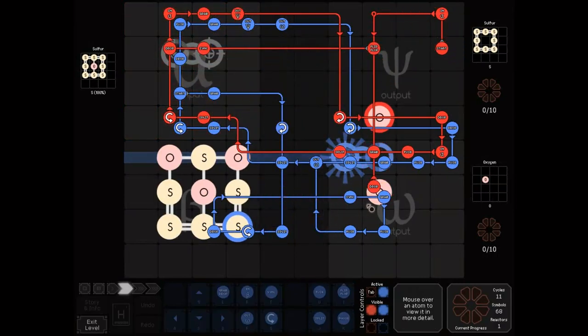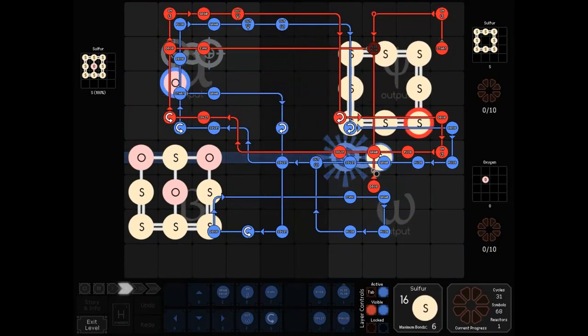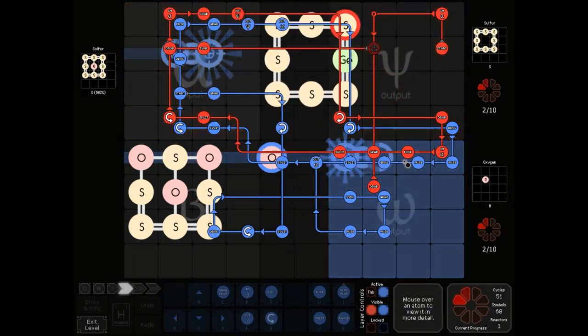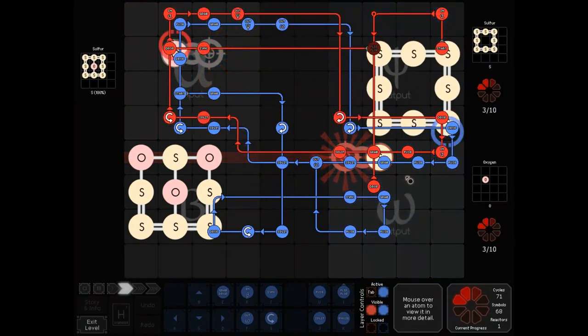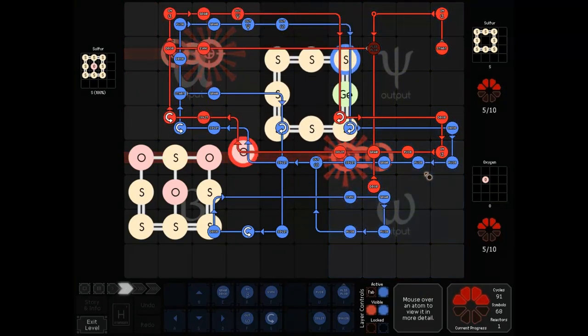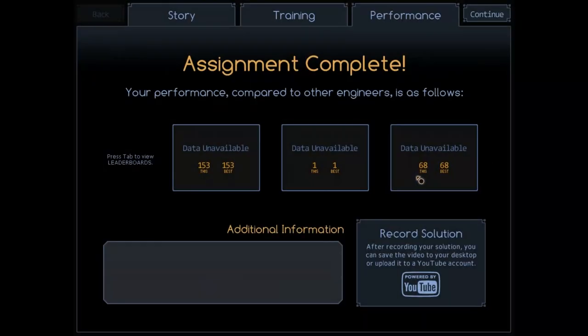Sudodude does a thing where both red and blue do all of the work themselves, so he can kind of double pump the solution. Most solutions I got had one Waldo just dealing with the catalyst and one Waldo just dealing with the sulfur ring. But here he's got red and blue both doing everything himself. It's a very good way to speed up a solution. I guess under 153, that's pretty good.